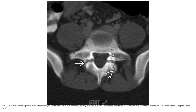This is a contrasting CT showing bilateral spondylolysis with an incomplete ring at the L5 level. Note the coronal orientation of the spondylolysis defects compared to the oblique orientation of the normal pars interarticularis.